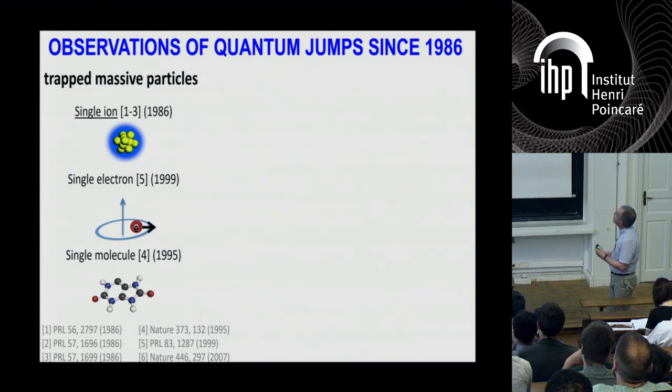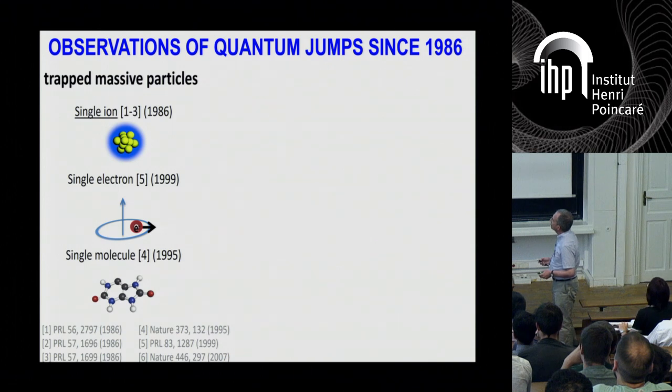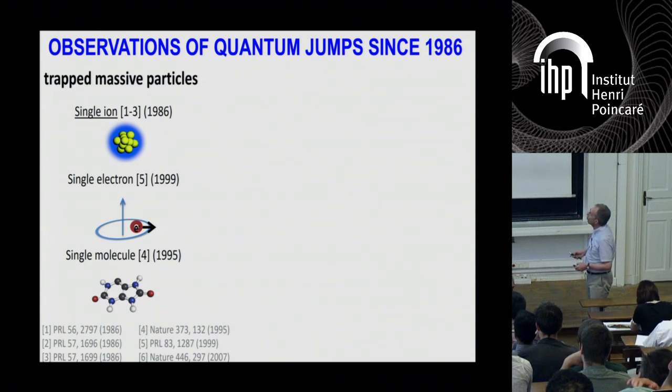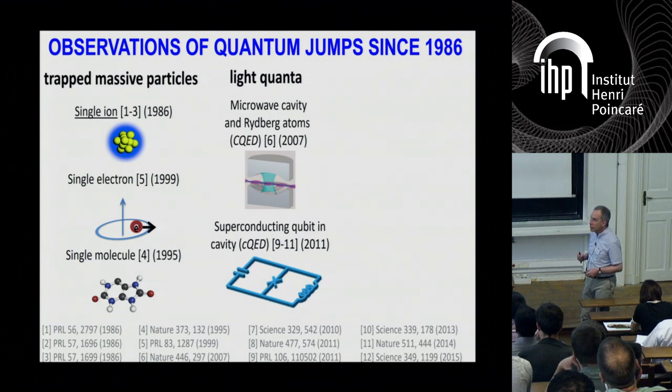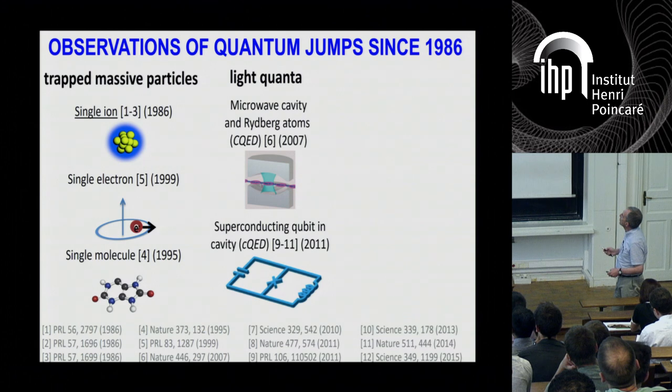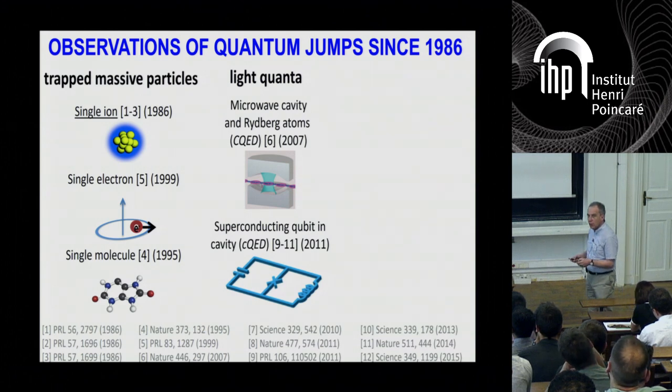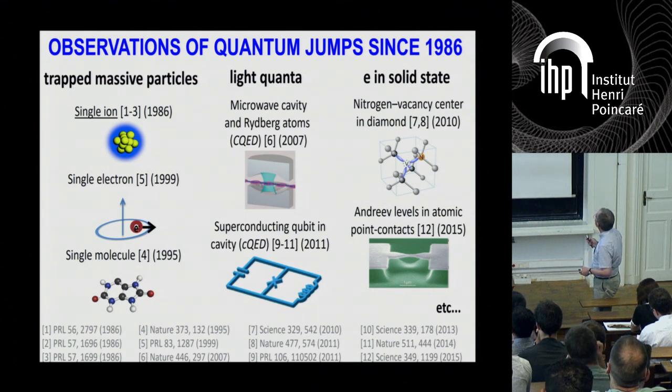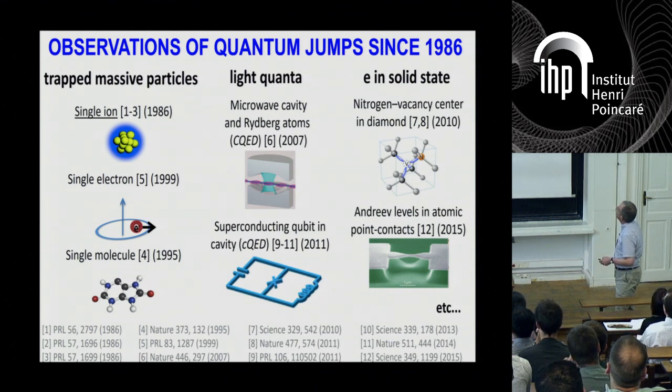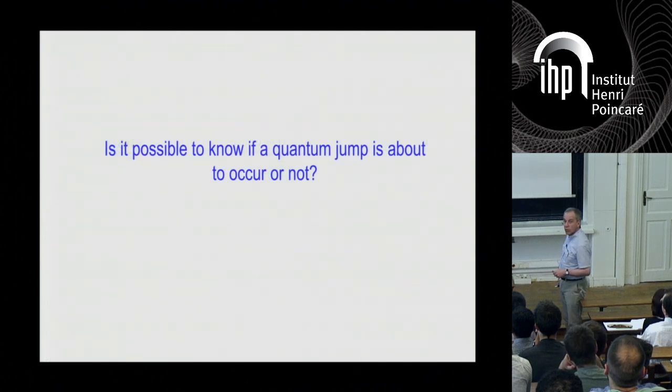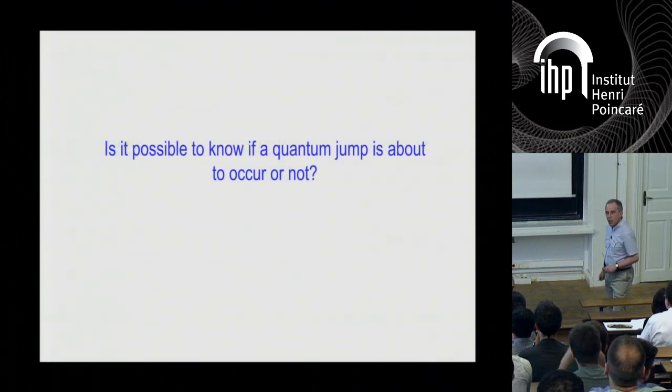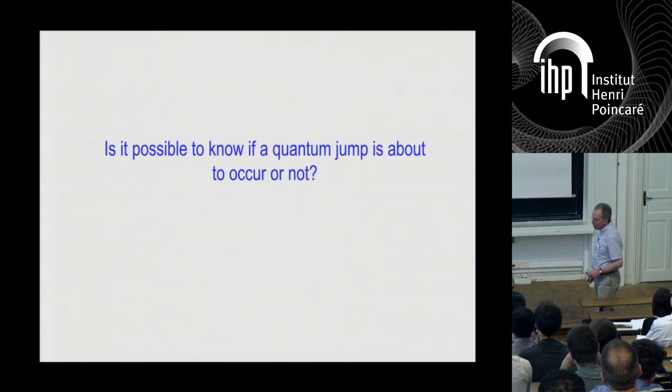So this original observation of quantum jumps in atomic physics was followed by many other such experiments in other systems. So they are observed not only for atoms, but also for photons themselves. This is the celebrated Haroche and Raimond experiment on the quantum jumps of light. They have been seen in superconducting qubit circuits and, more recently, in NV centers and even in NRAF levels in atomic point contacts. So these quantum jumps are very general in quantum physics. But here, in our experiment, we want to address the following question.